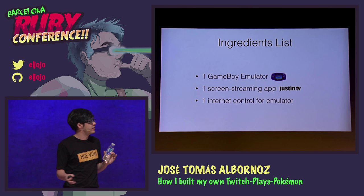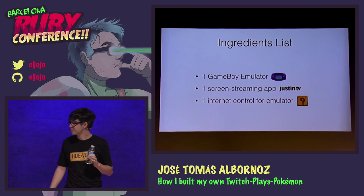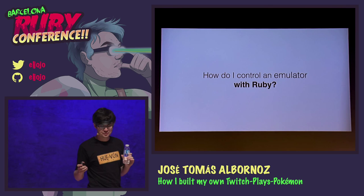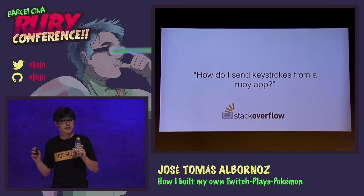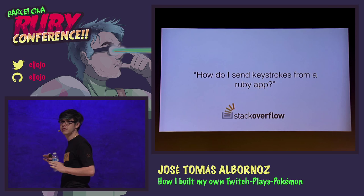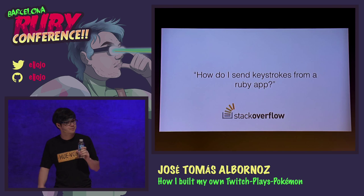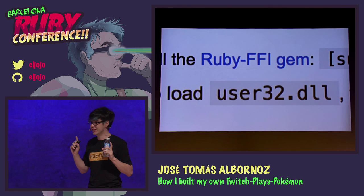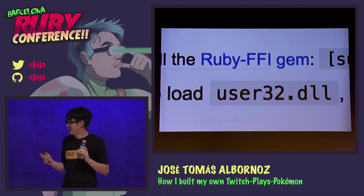The real challenge was figuring out how to control the emulator with Ruby. The first thing that popped into my mind was, how the heck do I control an emulator with Ruby? Can I even control my Mac with Ruby? After Googling for a while, I ended up in a Stack Overflow question called 'how do I send keystrokes from a Ruby application?' The solution read along the lines of: you could use the FFI gem to load user32.dll. That was clearly... oh no. That does the job, just what I needed, wrote Lucas Dprim.